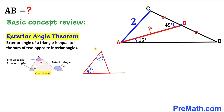Let me give you an example. This angle outside is going to be our exterior angle and that is going to be equal to the sum of these two interior angles — that is 50 degrees plus 60 degrees, which is going to be equal to 110 degrees.